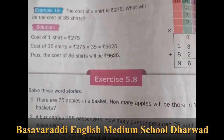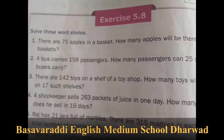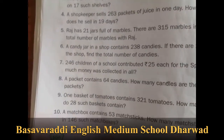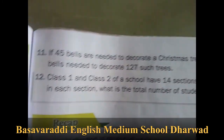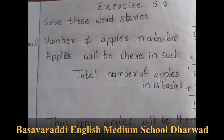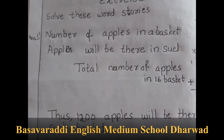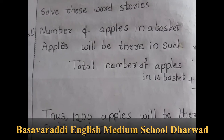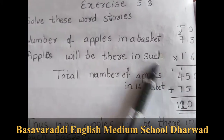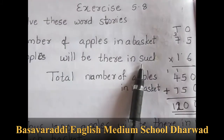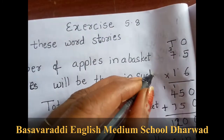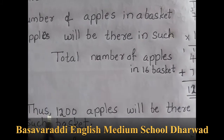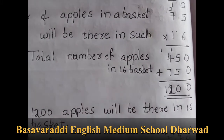Exercise 5.8. The first question: the number of apples in a basket is 75. How many apples will there be in 16 such baskets? So we multiply 75 into 16. The answer is 1200. Thus 1200 apples will be there in 16 baskets.